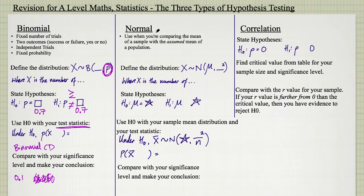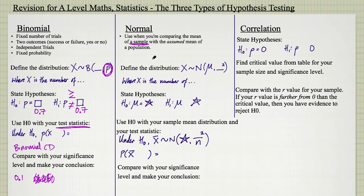On to the normal distribution — this is the end of the year two statistics syllabus. The final section is hypothesis testing with a sample mean. This is when you're comparing the mean of a sample. For example, drink cartons claim to have a mean of 50 millilitres of juice, but you take a sample of 15 of them and the mean of that sample is only 45 millilitres. Is that enough to persuade you there's something wrong with the claim of 50 millilitres? You're comparing with an assumed mean using a sample.